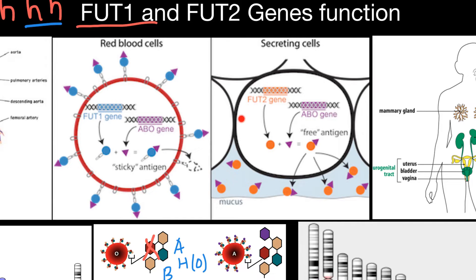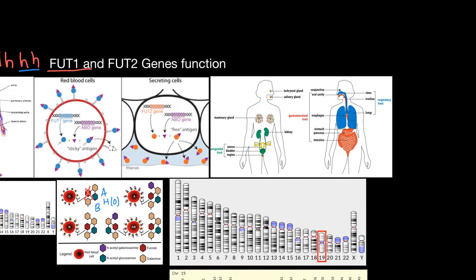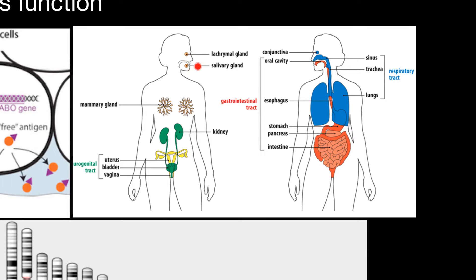This soluble form is found, for example, in mucus. Red blood cells and their antigens A and B are found in the blood circulatory system on the surface of red blood cells, but the soluble version of antigens A and B — the result of FUT2 — can be found in the secretions of glands and in the mucus layer of many organs. An interesting fact: the surface of the small intestine is about 200 times greater than the surface of our skin.